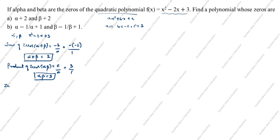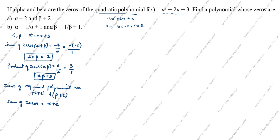Next step, zeros of the required polynomial are alpha plus 2 and beta plus 2. Sum of zeros = (alpha + 2) + (beta + 2) = alpha + beta + 2 + 2 = alpha + beta + 4. Alpha plus beta is 2, so 2 + 4 = 6. Sum of zeros equals 6.